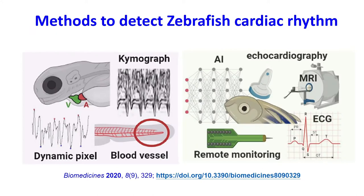These are the methods to detect zebrafish cardiac rhythm. They include Chemograph, dynamic pixel changes using the blood vessel, AI, acuocardiography, MRI, remote monitoring, and ECG.